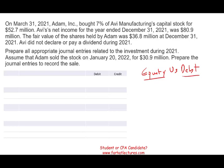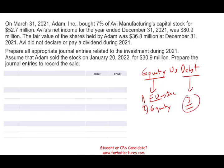Then FASB was recently changed. We used to have various categories: trading, available for sale, held to maturity. Now we only have one category for equity, and we still have three categories for debt. Actually for equity, we still have two categories because we have to account also using the equity method — either fair value through income or the equity method. And for debt, we have three other categories. So it creates a lot of complication real quick.